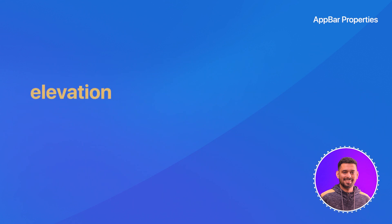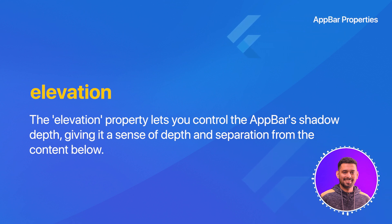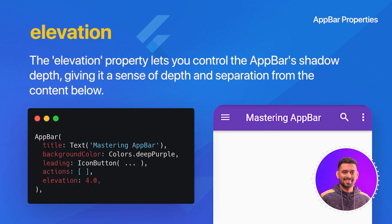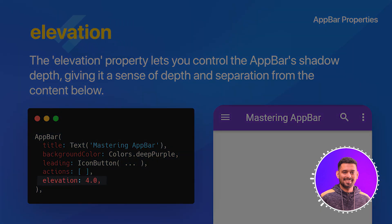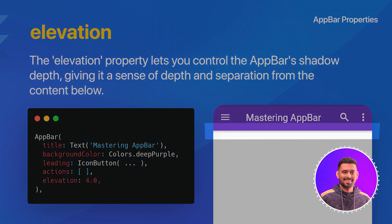Elevation: the Elevation property lets you control the AppBar's shadow depth, giving it a sense of depth and separation from the content below. In this example, we have set the AppBar's elevation to 4.0, which adds a subtle shadow below the AppBar.